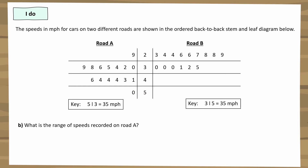Question b: what is the range of speeds recorded on Road A? Range is highest minus lowest. On Road A, the highest is 50 and the lowest is 29, so 50 minus 29 equals 21 miles per hour. For Road B it would be 35 minus 23 = 22, and for both roads combined it would be 50 minus 23 = 27.